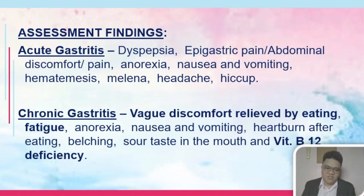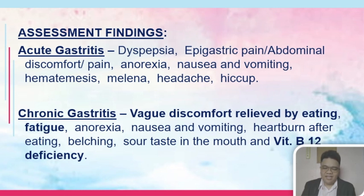Assessment findings: in acute gastritis, we expect dyspepsia, epigastric pain, abdominal discomfort, anorexia, nausea and vomiting, hematemesis and melena, headache and hiccups. In chronic gastritis, there may be vague discomfort relieved by eating. The patient experiences fatigue secondary to pernicious anemia.